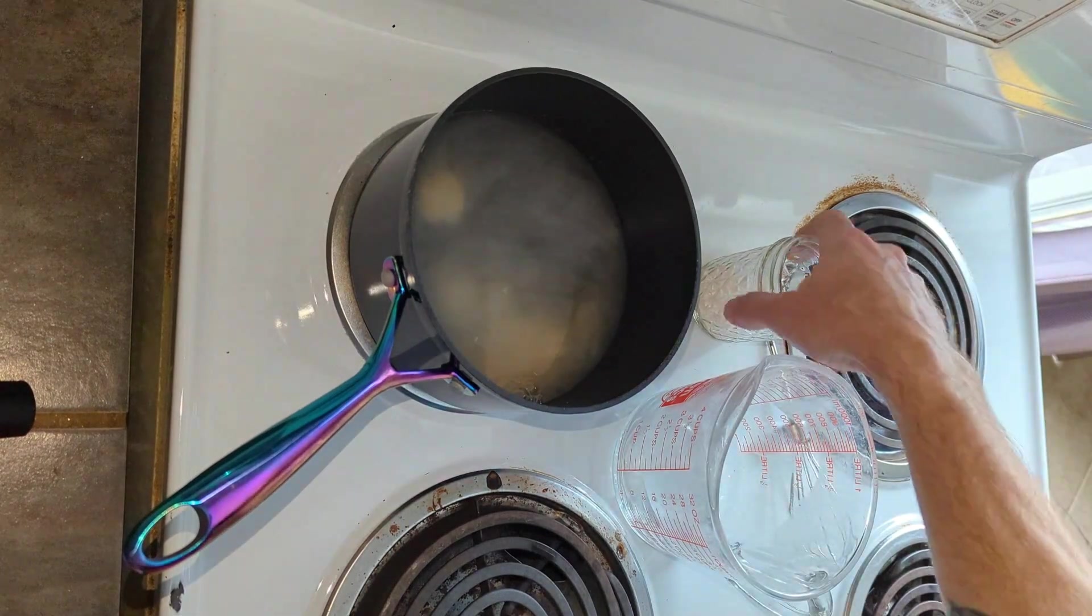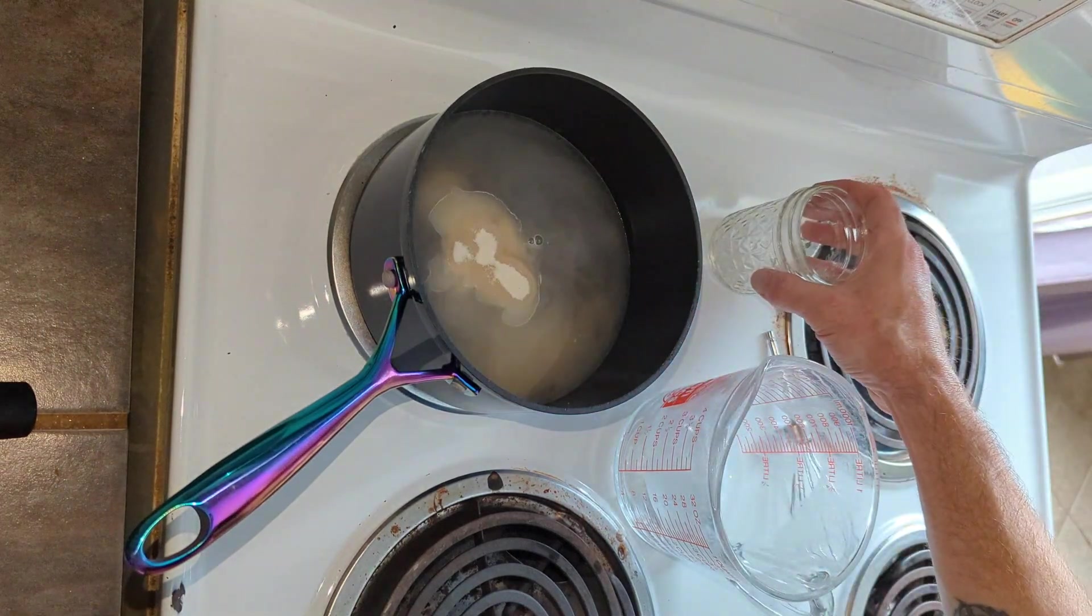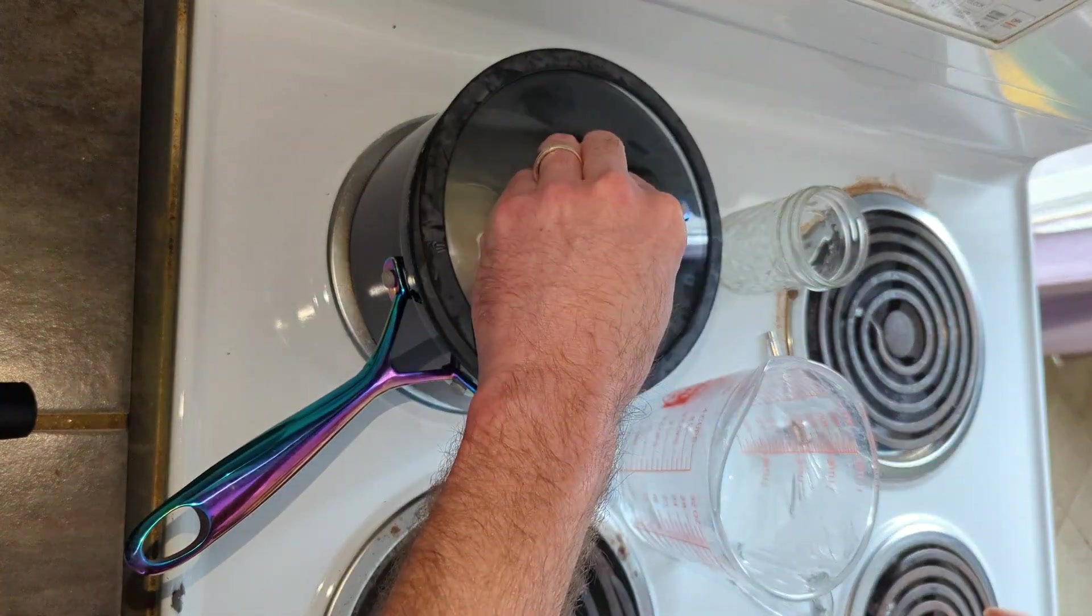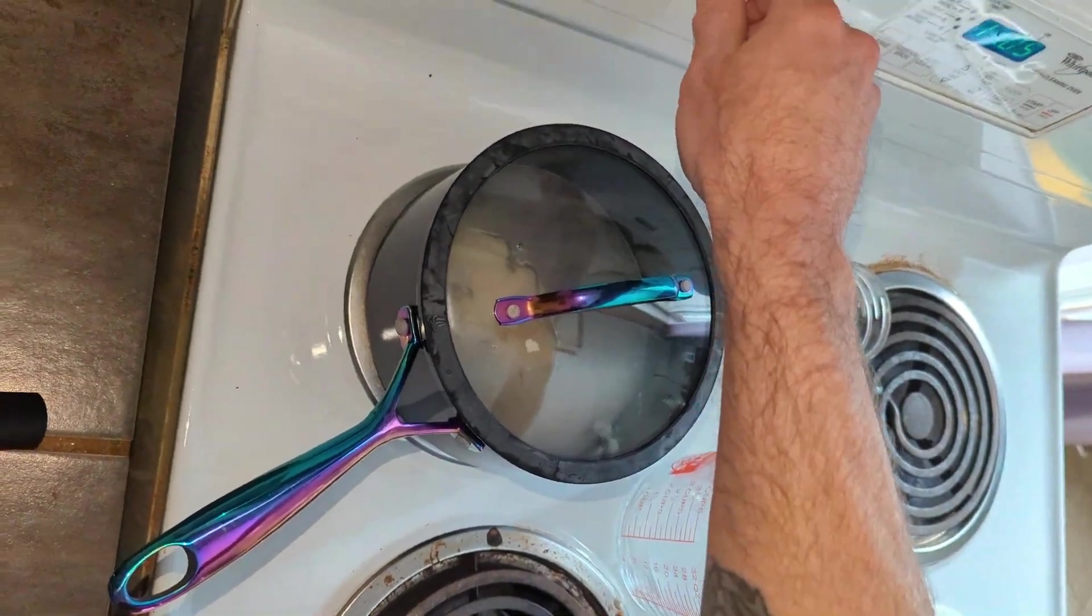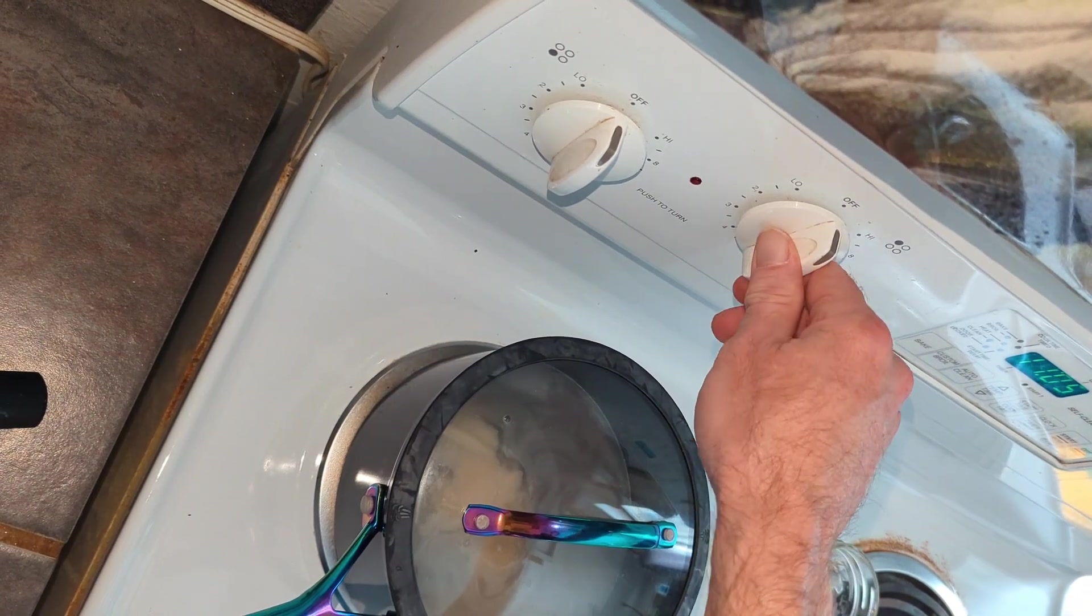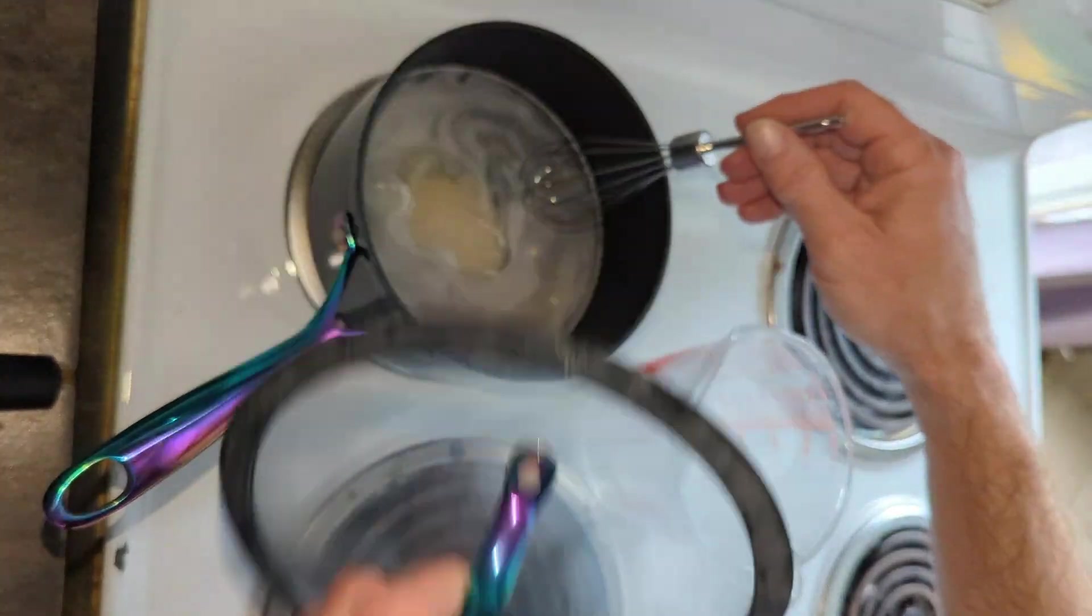On your stove with the pot on the burner, pour the 500 milliliters of water into the pot, then add your 8.5 grams of LME and 10 grams of agar powder into the pot with the water. Stir it up with the whisk, making sure to mix it well.